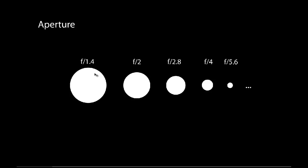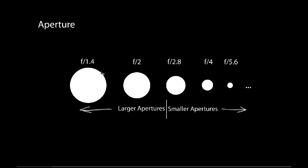Using f2, f2.8, f4, f1.4 — all of these show you exactly what the aperture does. The bigger number is actually a small aperture, and the smaller number is actually a large aperture. Do not get this twisted: big numbers refer to small apertures; small numbers refer to big apertures. A small number — a large aperture — means your diaphragm is opened all the way to the maximum, and that means a lot of light is going to be entering.